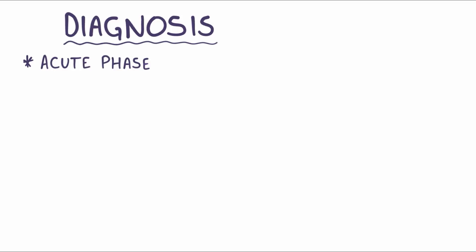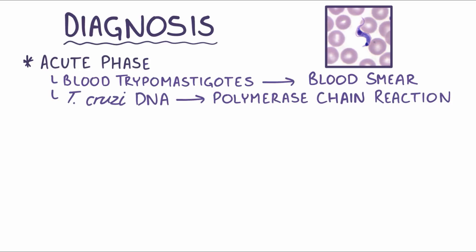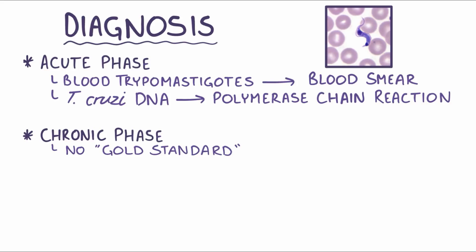The most definitive diagnosis for the acute phase is made by microscopic detection of blood tripomastigotes in a blood smear or buffy coat preparation. Polymerase chain reaction to detect T. cruzi DNA is also possible for certain subspecies, even at very low levels in the blood. But there's no gold standard for diagnosing the chronic phase of the infection. Some helpful tools are serology, which identifies antibodies, or molecular tests that look for the presence of T. cruzi antibodies or antigens. There's also xenodiagnosis, which is when a reduviid bug's midgut is tested for T. cruzi.